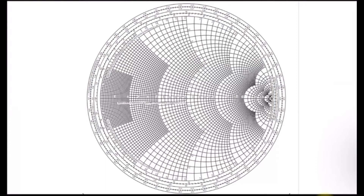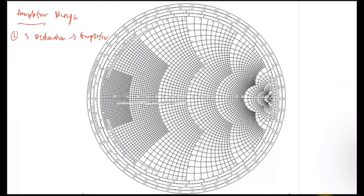Today our class will continue on amplifier design, but before that, let's recall what you have learned. We started with a few definitions of amplifier — three definitions: power gain, available power gain, and transducer power gain. The most useful gain definition in this topic is the transducer power gain.